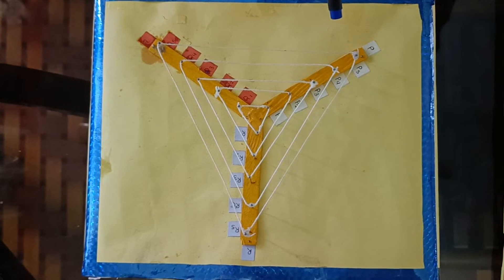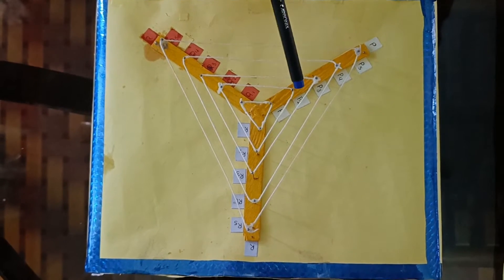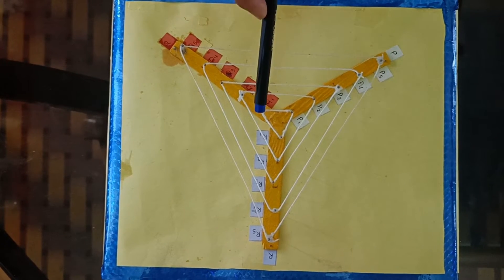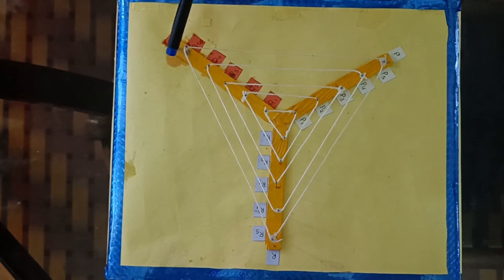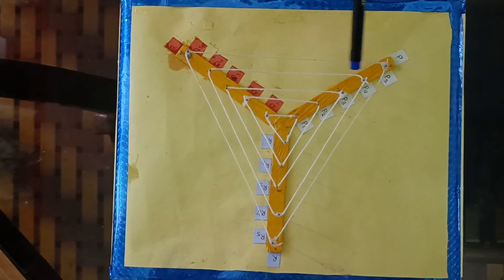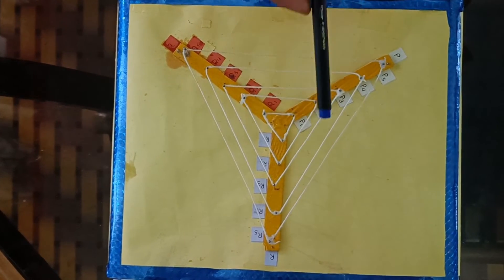Now you can see that here we have fixed five nails at equal distance. Name them P1, P2, P3 up to P5, Q1, Q2, Q3 up to Q5, and R1, R2, R3 up to R5 on strips P, Q, and R respectively.